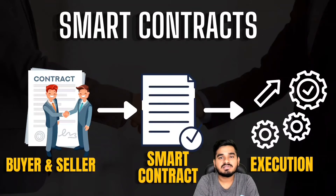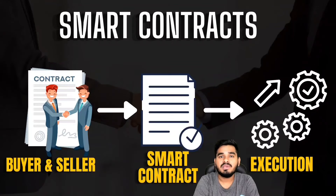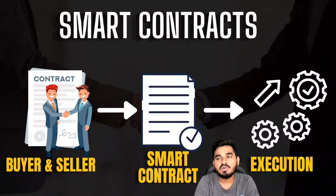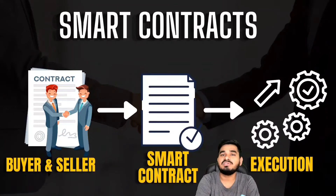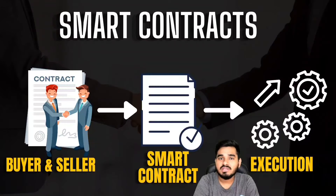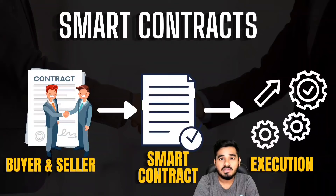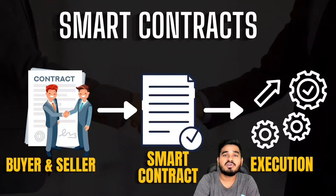Take the example of a bank transaction: if you send money to someone, there is an intermediary involved in your contract. Similarly, if you are buying land from a seller, you need an intermediary to register all the details — that is a contract. A smart contract in blockchain means that when you perform a transaction with a receiver, a contract is automatically created. A smart contract is a program written using the Ethereum blockchain, and when a transaction happens, the contract is created automatically.